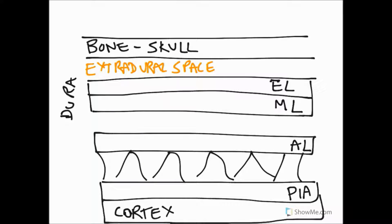We now have our full picture from the outermost surface of bone all the way down to the brain itself. We've got our extradural space, and now we've got another potential space called the subdural space. This is also a potential space and not a true space — the arachnoid layer is usually tightly adhered to the meningeal layer of the dura, and this space only occurs when there is trauma and rupture of a vessel that bleeds into it and forces those layers apart.